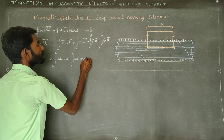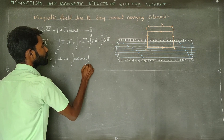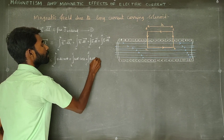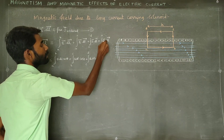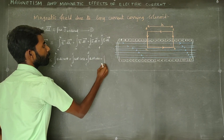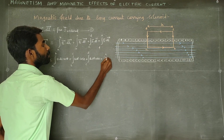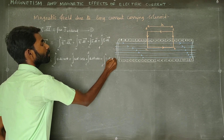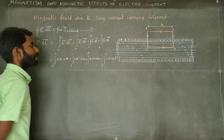Plus integral over CD of B dL cos theta, plus integral over DA of B dL cos theta. Are you ready? Now let's look at the angle for each segment.